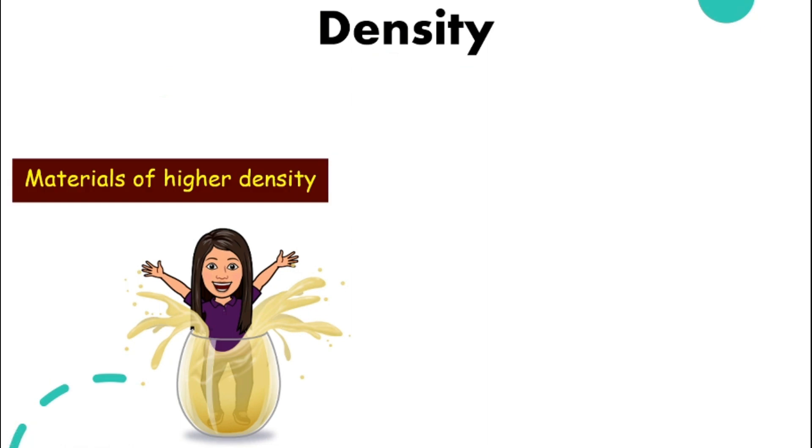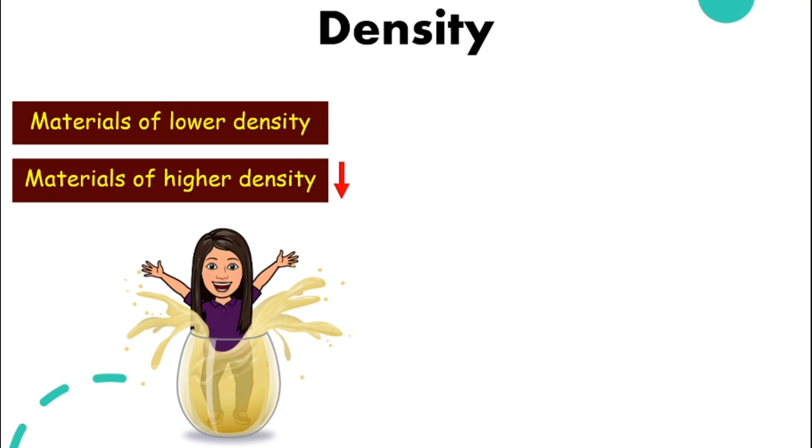While materials with higher density, meaning we have a bigger number, will always sink to the bottom. Compared to materials of lower density, meaning the number is actually smaller, it will float on top. I need you to understand this concept. Once you understand this concept, we will be able to look at the different applications in our everyday life.